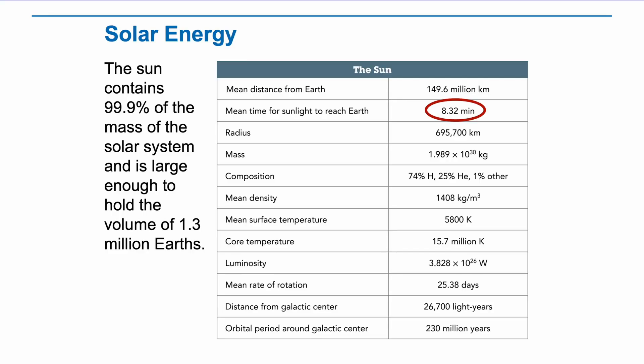Given this distance, how long does it take for sunlight to reach Earth? Just a little over eight minutes. An interesting way to think of this is to ask, what would happen if the Sun's light completely went dark? We wouldn't know about it until 8.32 minutes later.